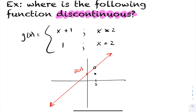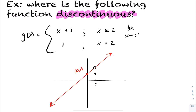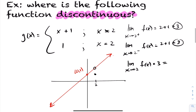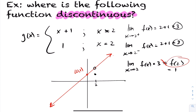The function is continuous everywhere else since it's a linear relationship. The only issue is at x equals 2. Taking the limit as x approaches 2 from the right, we apply the linear piece: 2 plus 1 equals 3. Likewise from the left, we also get 2 plus 1 equals 3. So the limit as x approaches 2 exists and equals 3. However, for continuity, this must equal the function at 2, which equals 1. Since the limit is 3 but f(2) equals 1, we have a point of discontinuity at x equals 2.